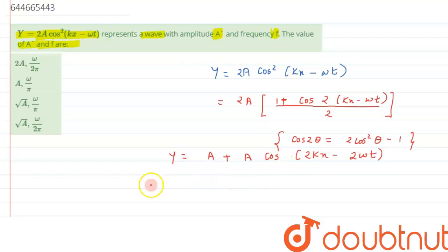So if we compare this equation with the standard equation, the standard equation we can write over here as y equals to a cos kx minus omega t.